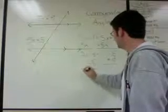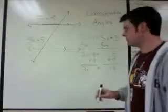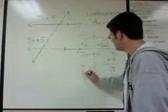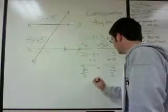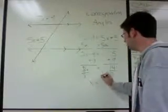2x equals 14. Then divide by 2. Two's cancel out on the left side. X equals 14 over 2 is equal to 7. So there you go.